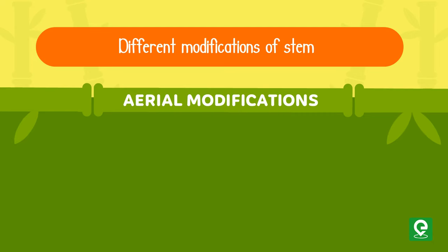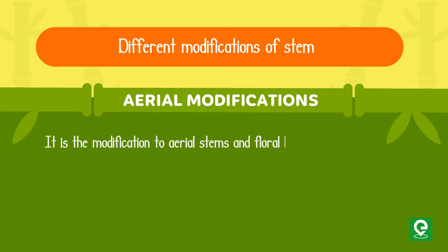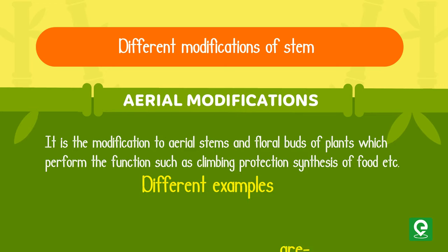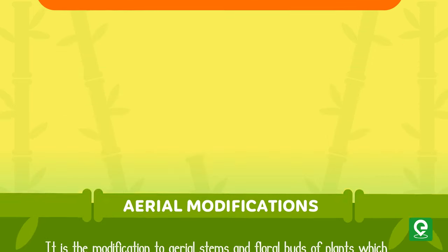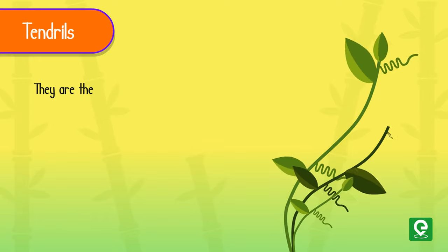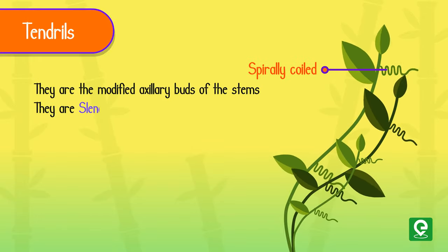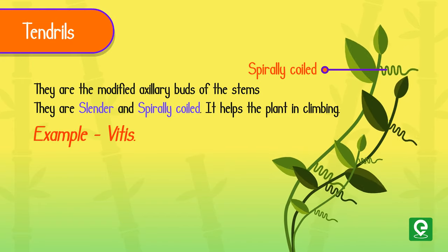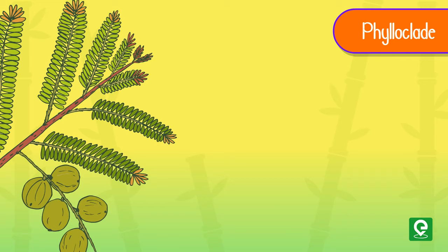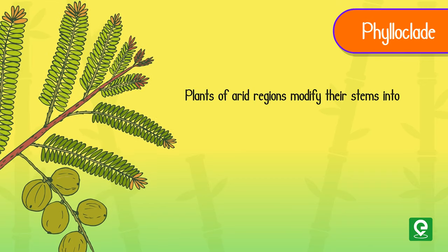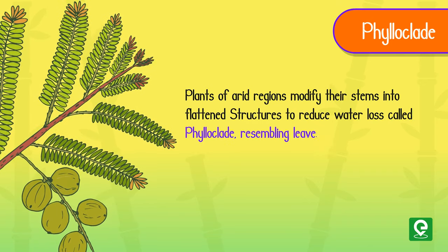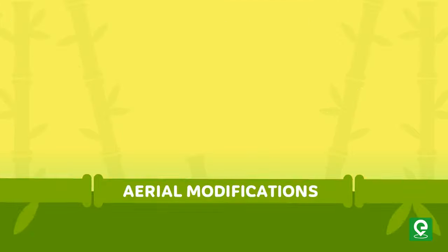Number one: aerial modifications. These are modifications of aerial stems and floral buds that perform functions such as climbing, protection, and synthesis of food. Tendrils are modified axillary buds of the stems — they are slender and spirally coiled, helping plants in climbing. Example: Vitis. Phylloclade: plants of arid regions modify their stems into flattened structures to reduce water loss, called phylloclades, which resemble leaves. Example: Opuntia.